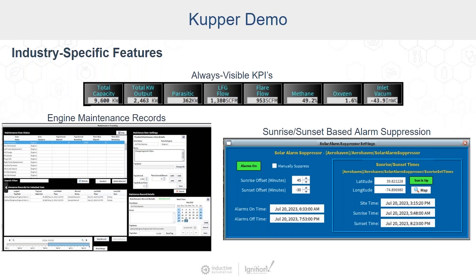For the large 70-plus solar field system, we can experience a large number of nuisance alarms as the sun goes down or comes up. We implemented a system which allows entering the latitude and longitude for the site to calculate sunrise and sunset times, combined with a dead band after sunrise and before sunset to suppress alarms and ensure that alarms received are actually important enough to act on.